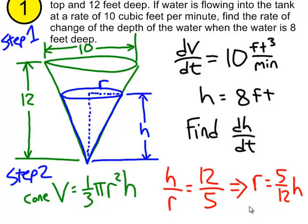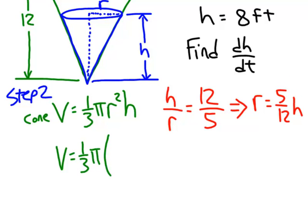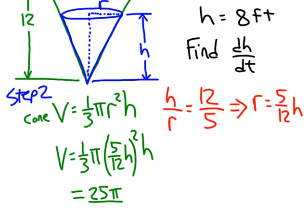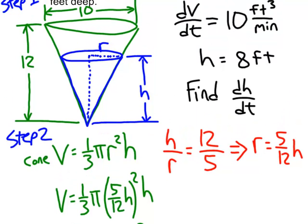Now we can substitute into the volume formula. I'm going to substitute five-twelfths h in for r, giving us V equals one-third pi times (5/12 h) squared times h. Simplifying: five squared gives 25, and three times twelve squared gives 432. The h squared times h gives h cubed. So V equals 25π/432 times h cubed — volume entirely in terms of h.